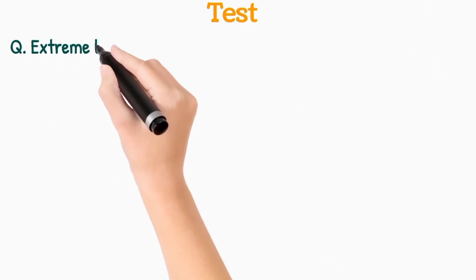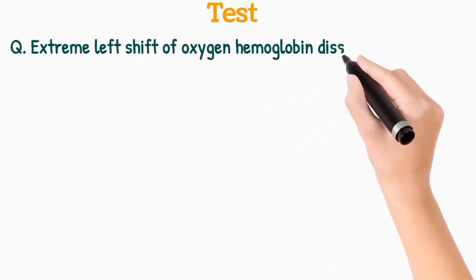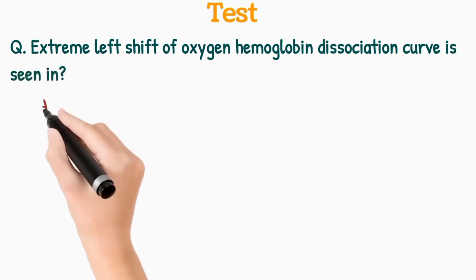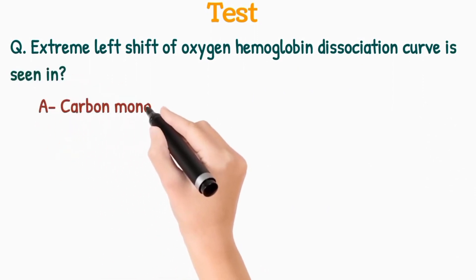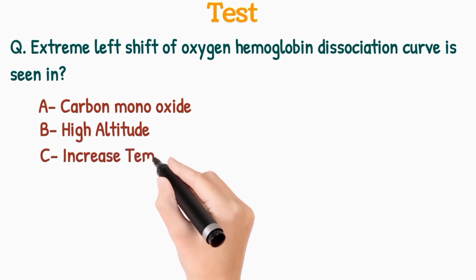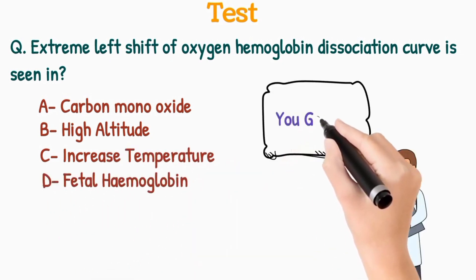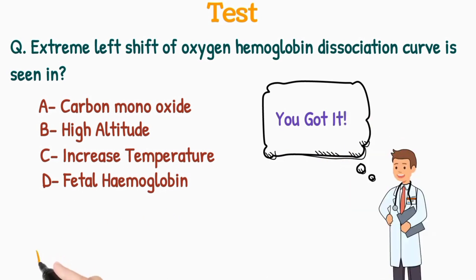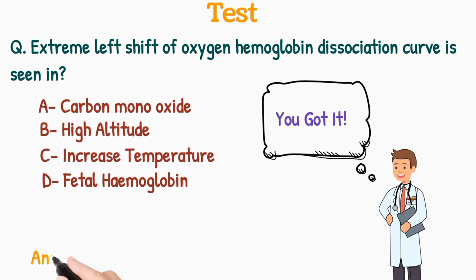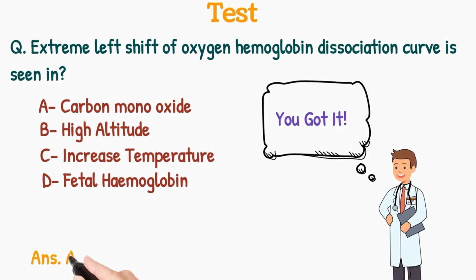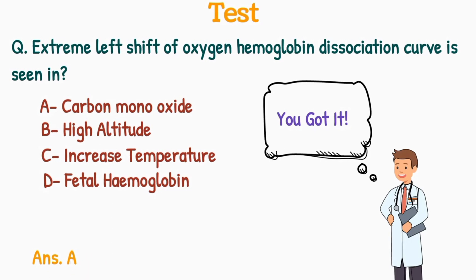Question: Extreme left shift of the oxygen hemoglobin dissociation curve is seen in: A. Carbon monoxide, B. High altitude, C. Increase temperature, or D. Fetal hemoglobin. When carbon monoxide binds to the heme of a hemoglobin molecule, the oxygen affinity of the rest of the heme portions of the same hemoglobin molecule increases. As a result the curve shifts towards extreme left, so the correct answer is option A — carbon monoxide.